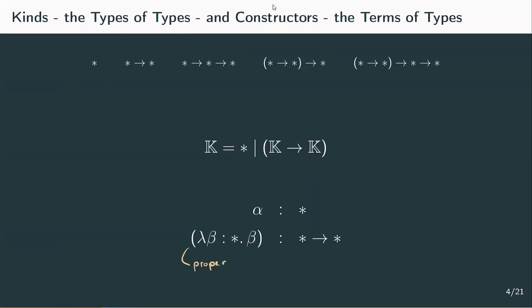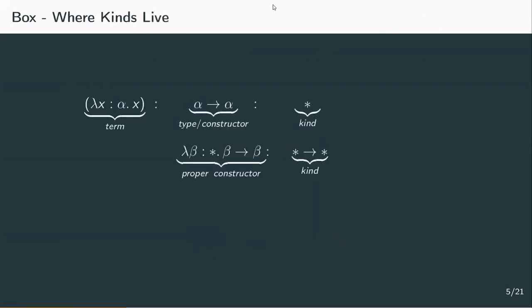To distinguish between types and type abstractions that actually do construct something, we're going to call the latter proper constructors. So constructors have a kind. With terms, constructors, and kinds, we can build these chains: a term has a type, which has kind star. And a proper constructor, which can't be inhabited by a term, can have a kind like star to star.